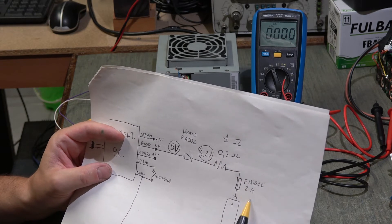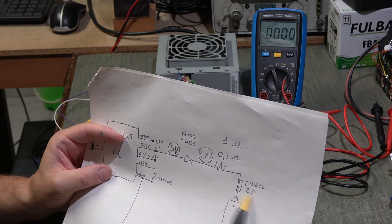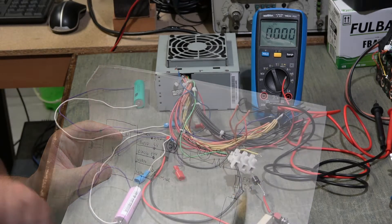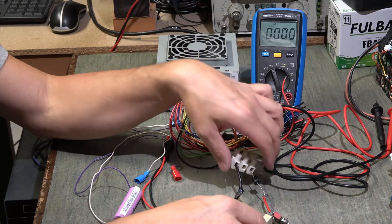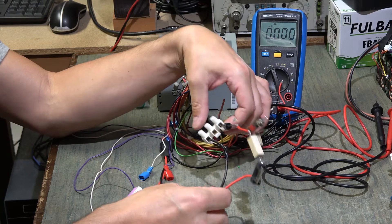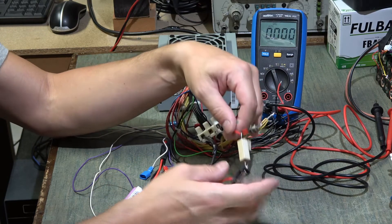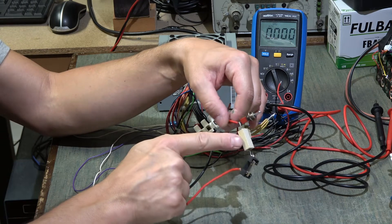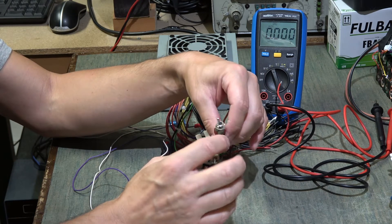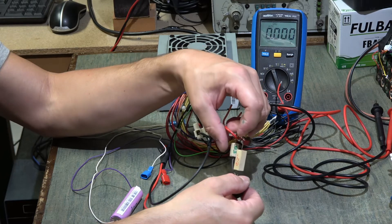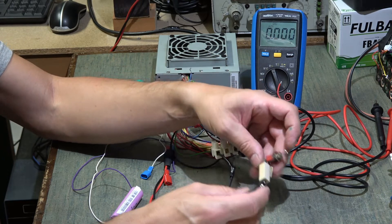For that I put the fuse of 2 amperes. Then the circuit is this: I made the diode, I made a switch that I choose either this resistance of 1 ohm or this one of 0.3 ohm, smaller. Then I put my fuse.